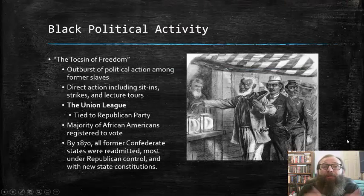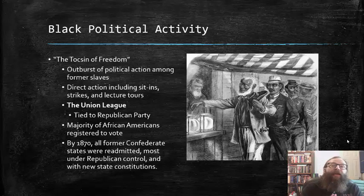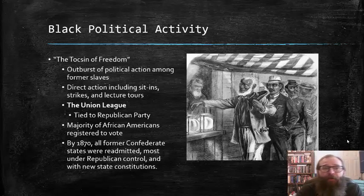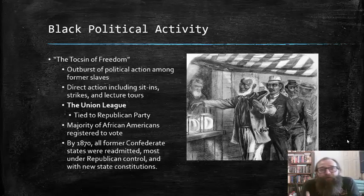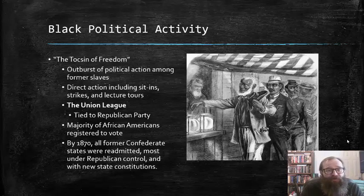After the passage of the 15th Amendment to the Constitution, which guaranteed the right to vote regardless of race, plus the Reconstruction Acts mentioned in the last installment of this lecture series, there was an outburst of political action among former slaves. It was as if all those years of slavery had pent up frustrations, and once they were able to do so, it exploded forth in all sorts of action and activities among former slaves.